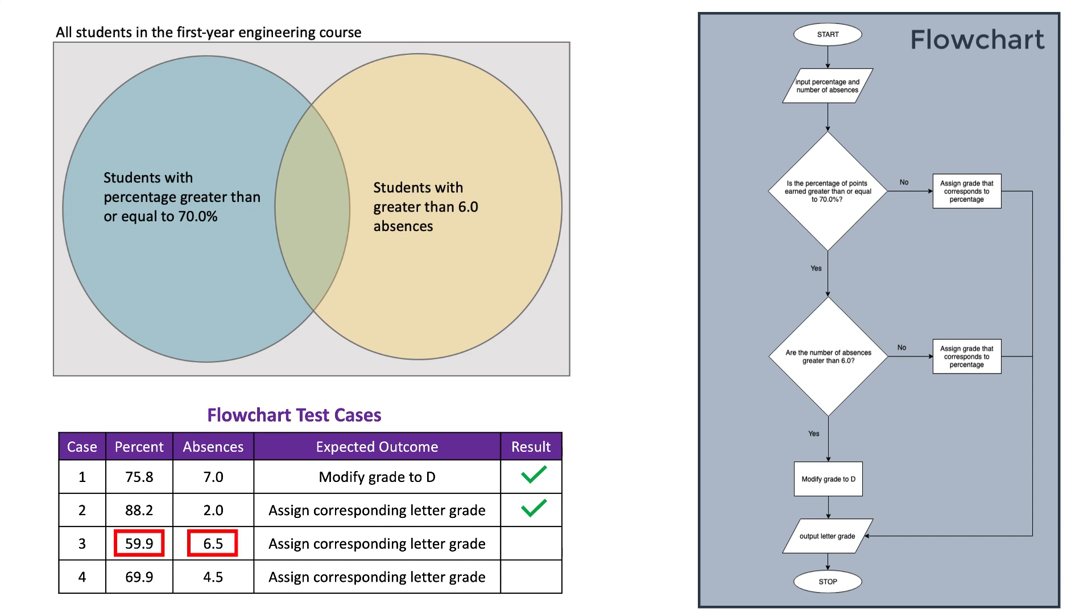For case 3, I input 59.9% and 6.5 absences. At the first decision, the answer to is the percentage of points greater than or equal to 70% is no, so I move to the right and assign the grade that corresponds to the percentage. Once again, this is the expected outcome. Notice that we skipped the second decision because it didn't matter.